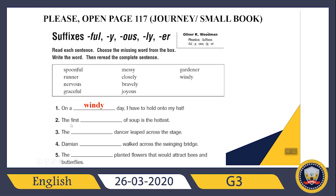What about the second sentence? 'The first ___ of soup is the hottest.' The answer is spoonful — a spoonful of soup. What about the third sentence? 'The ___ dancer leaped across the stage.' The joyful dancer leaped across the stage. What about the fourth sentence? 'Damien walked across a swinging bridge.' He needs to be brave, so: Damien bravely walked across the swinging bridge.